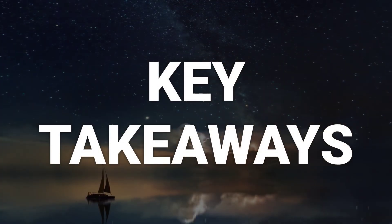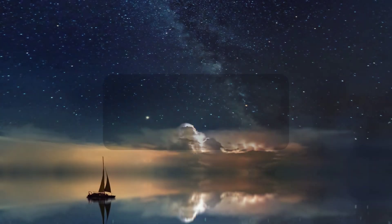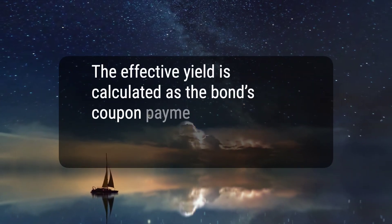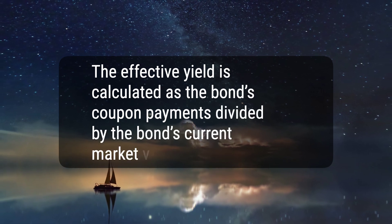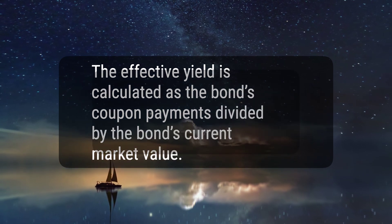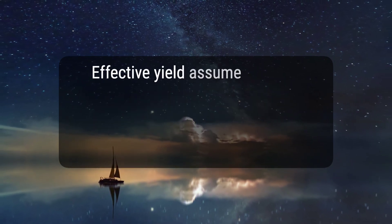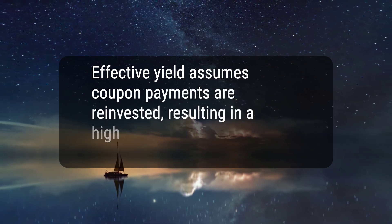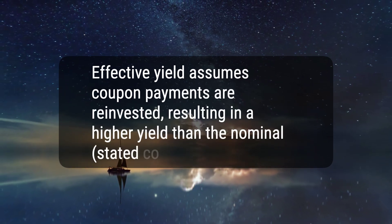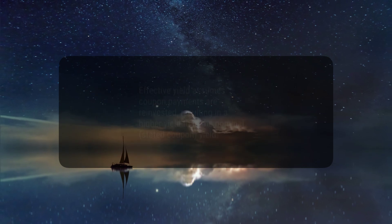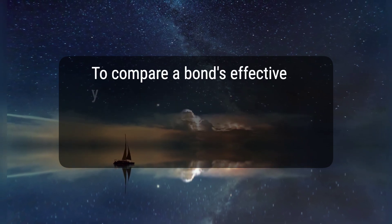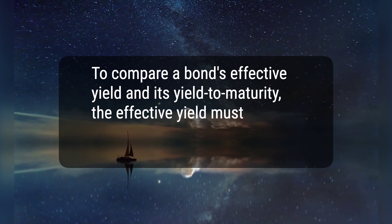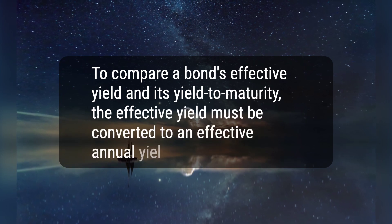Here are three key takeaways. 1. The effective yield is calculated as the bond's coupon payments divided by the bond's current market value. 2. Effective yield assumes coupon payments are reinvested, resulting in a higher yield than the nominal, stated coupon yield. 3. To compare a bond's effective yield and its yield to maturity, the effective yield must be converted to an effective annual yield.